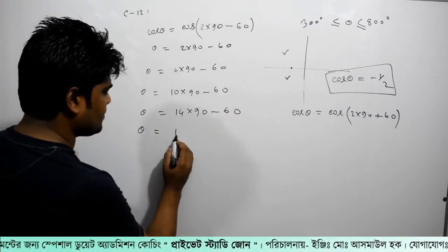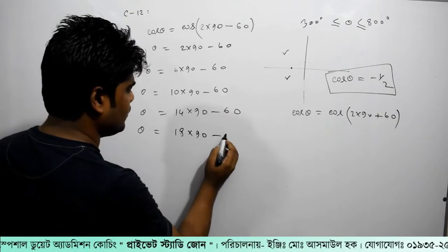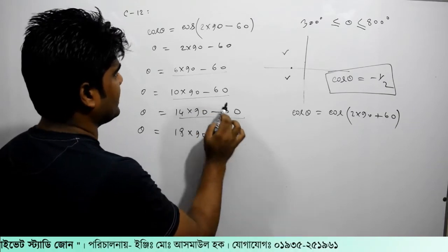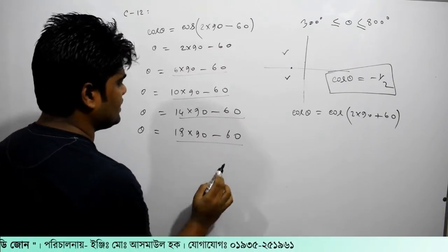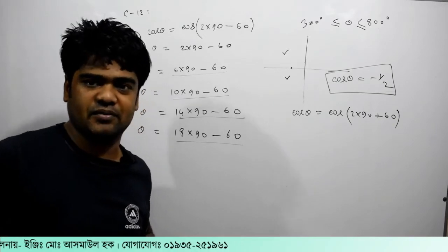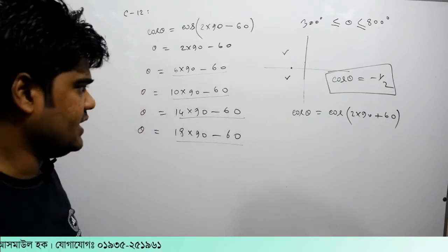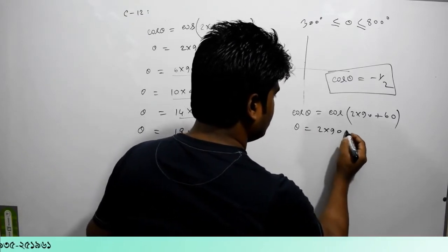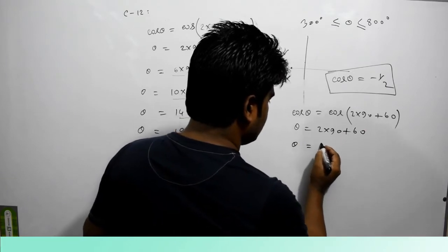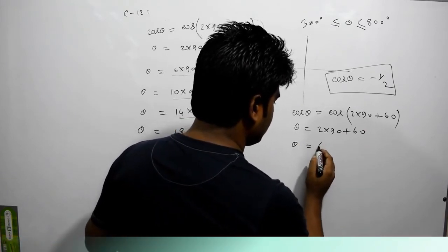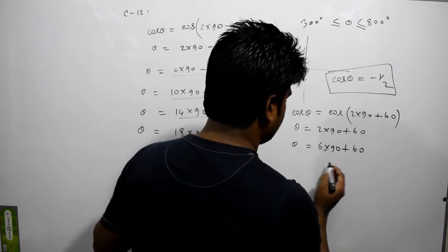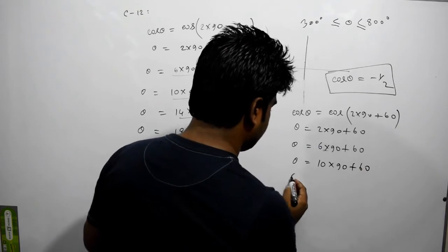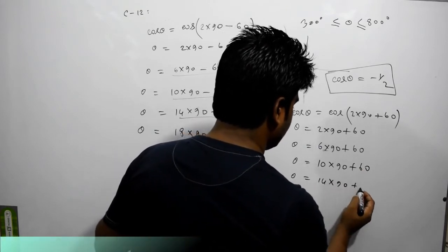This is the same as 4×9 minus 6. We write: 1 to 1, and read the most important part. So 1 to 1 equals n×90 plus 6. We have 4 times 90 plus 6, and 10 times 90 plus 6, and 14 times 90 plus 6.